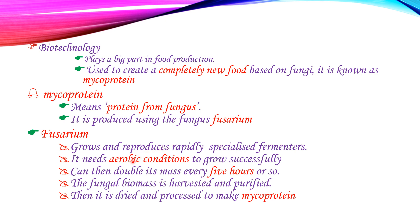Fusarium needs aerobic conditions to grow successfully. Aerobic conditions means it uses oxygen. The fungus is then harvested and purified, dried and processed to make mycoprotein.